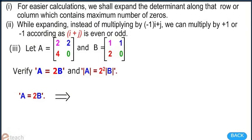Let us note some remarks. For easier calculation, we shall expand the determinant along that row or column which contains the maximum number of zeros. While expanding, instead of multiplying by (-1)^(i+j), we can multiply by +1 or -1 according as i+j is even or odd.